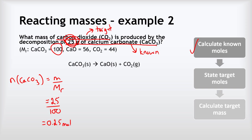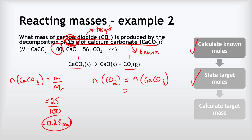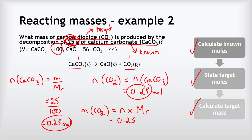The next step is to state the target moles. Our calcium carbonate and carbon dioxide are in a one-to-one ratio, so the number of moles of CO2 equals the number of moles of CaCO3, which is 0.25 moles. Our third step is to calculate the target mass: the mass of CO2 equals 0.25 multiplied by its Mr of 44, giving a final answer of 11 grams.